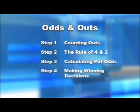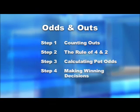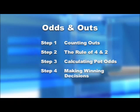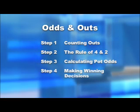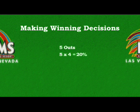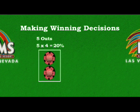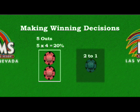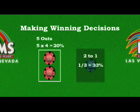Step four: making winning decisions. After counting my outs, using the rule of four and two, and figuring out the pot odds, I can make correct winning decisions at the table. This is what it's all about. Suppose I have five outs after the flop — five times four equals twenty percent, so I've got a twenty percent chance of making my hand. After the bet, there's two hundred dollars in the pot and I'm being asked to call one hundred. I'm getting two to one pot odds, so I need a one out of three, or thirty-three percent chance to win, to justify calling that hundred dollar bet. I only have a twenty percent chance of winning, so in this case, folding is the winning decision.